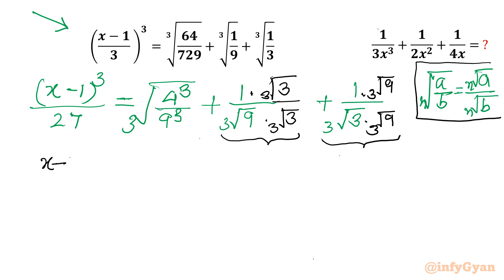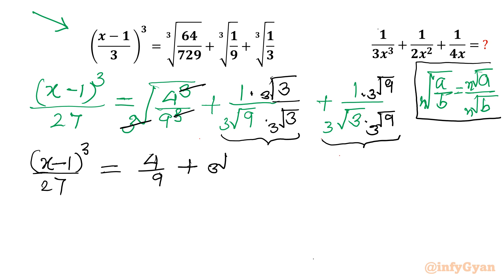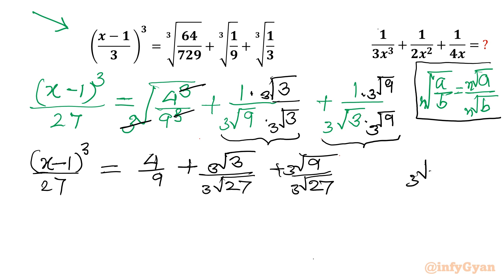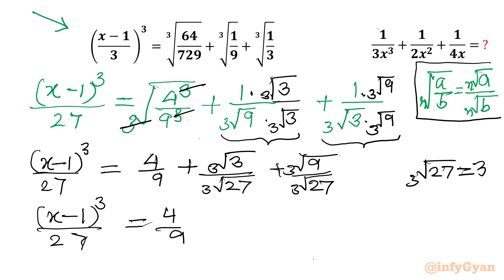So I can write: x minus 1 whole cube over 27 equals — cube root and power cancel — so it is 4 over 9 plus cube root of 3 divided by cube root of 27, plus cube root of 9 divided by cube root of 27. Now cube root of 27 is 3. So x minus 1 whole cube divided by 27 equals 4 over 9 plus cube root 3 over 3 plus cube root 9 over 3.